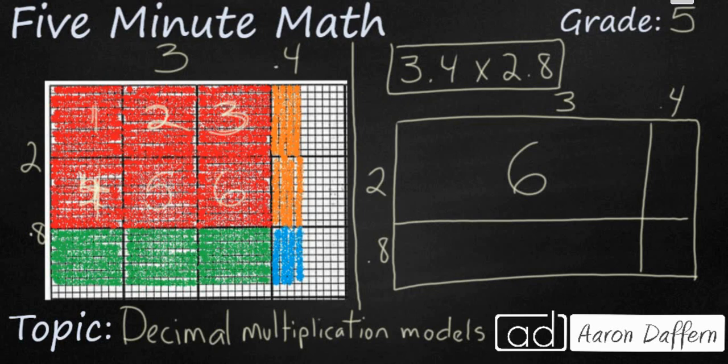Now we're going to multiply our 4 tenths times 2. So we multiply this 4 tenths times 2 right here. And that's going to give us 0.8.